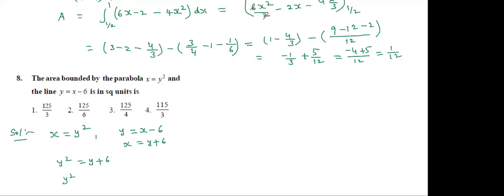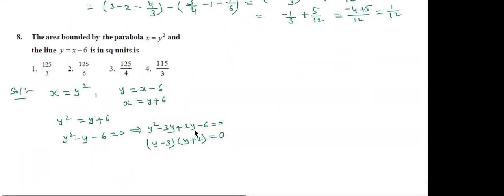Factoring y² - y - 6 = 0: (y - 3)(y + 2) = 0. So y = 3 and y = -2. These are the limits of integration.